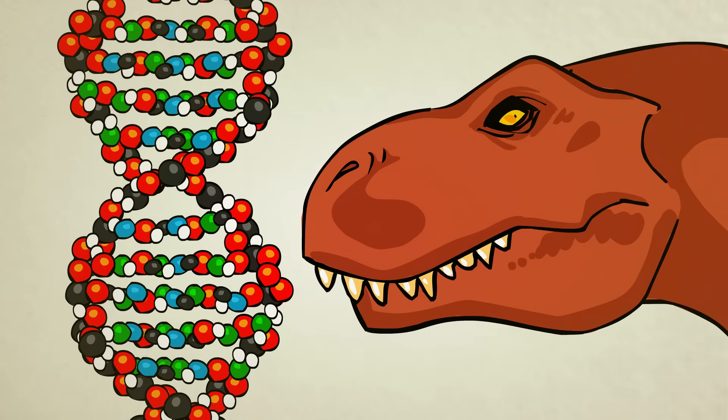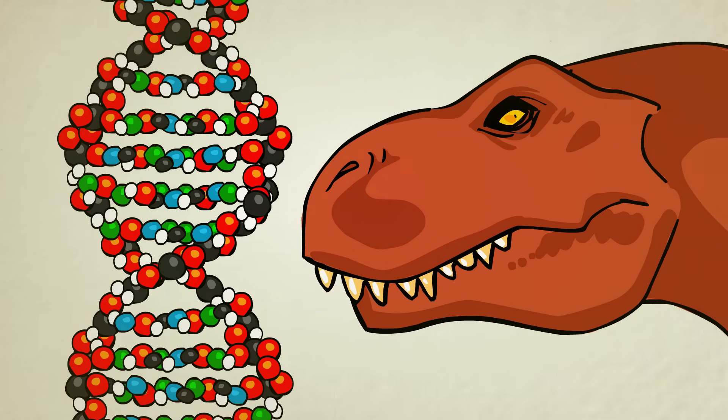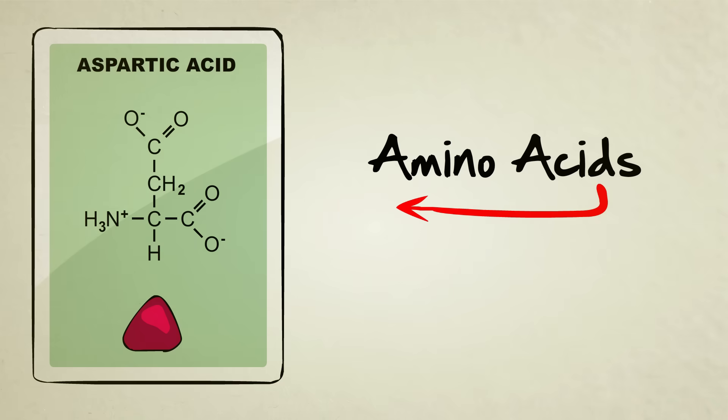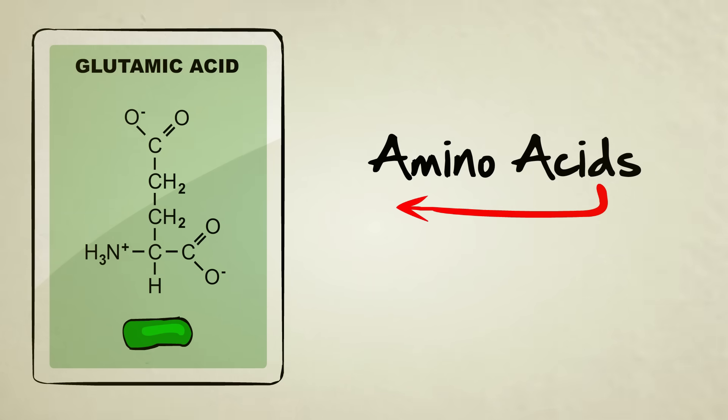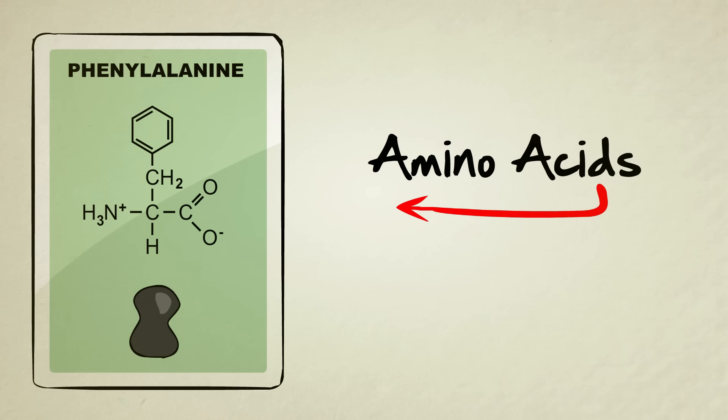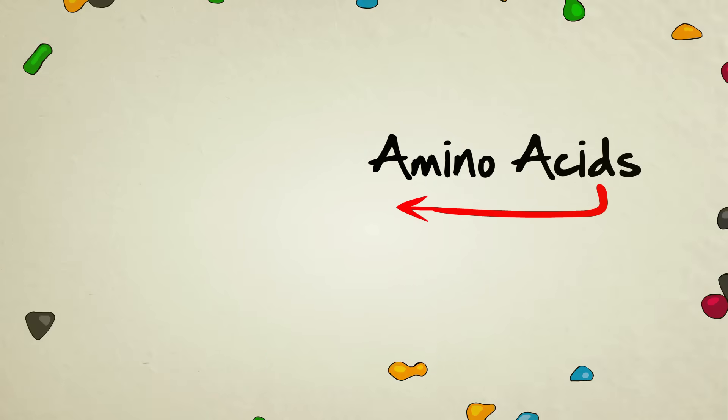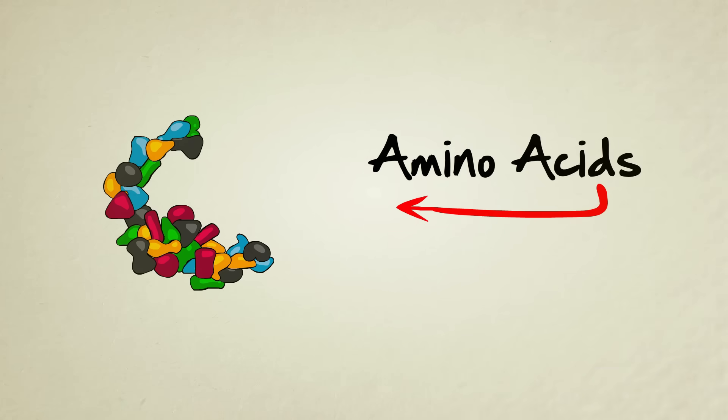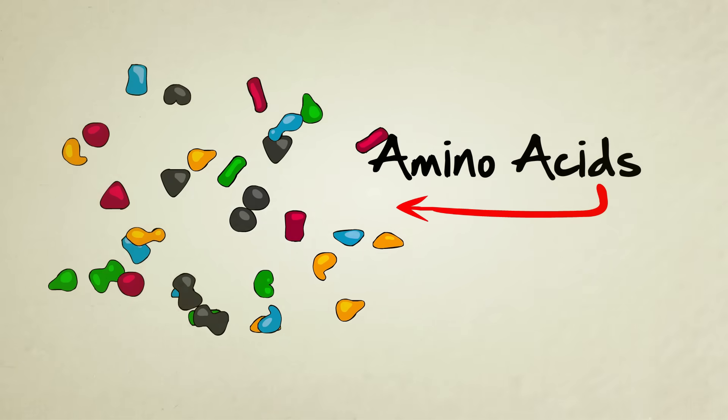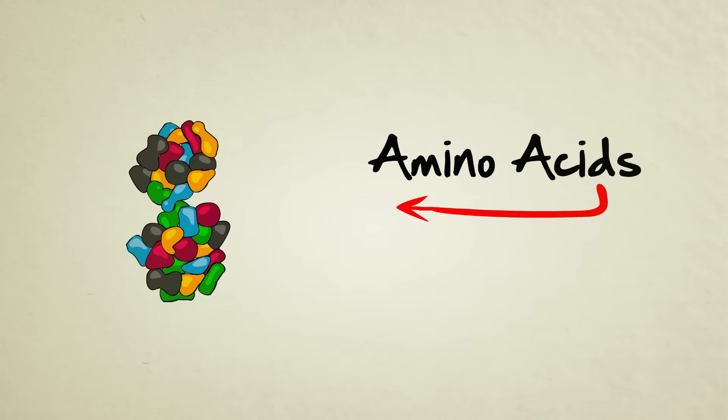To help answer that question, let's first take a quick look at amino acids. Amino acids are tiny little chemicals inside our bodies that are so important, they're often referred to as the building blocks of life. There's about 20 different kinds, each with their own unique shape. The neat thing about them is they can be attached to each other kind of like Legos to produce an endless variety of larger particles known as proteins.